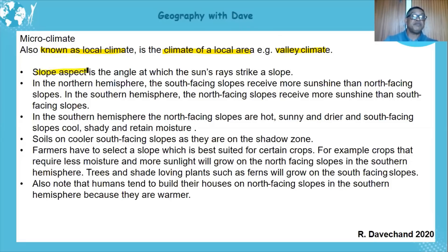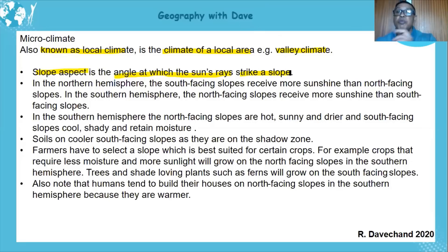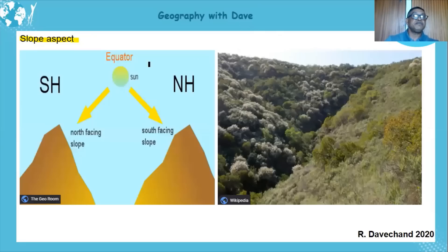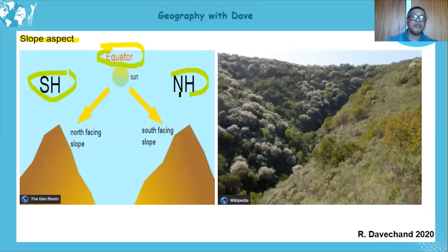Slope aspect is the angle at which the sun's rays strike a slope. It will determine which slope gets more sunlight and which slope gets less sunlight. If we look at this diagram, we have the equator, the southern hemisphere, and the northern hemisphere. The sun's rays will strike certain facing slopes.